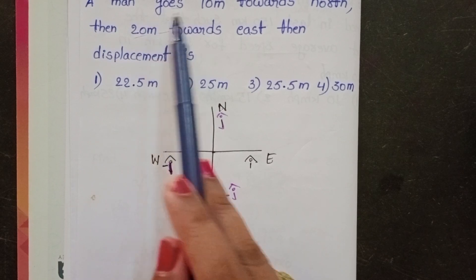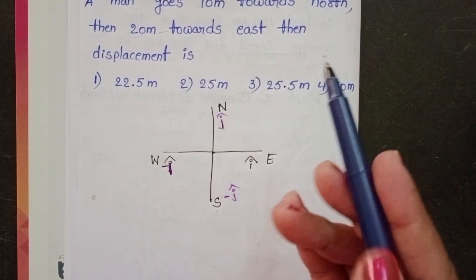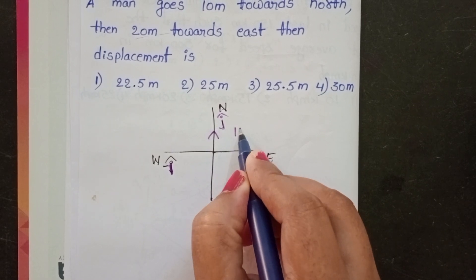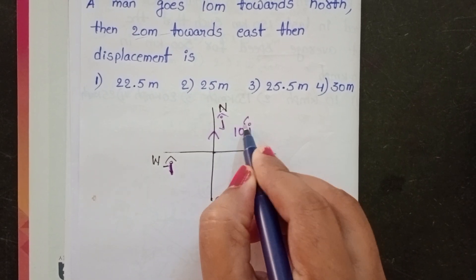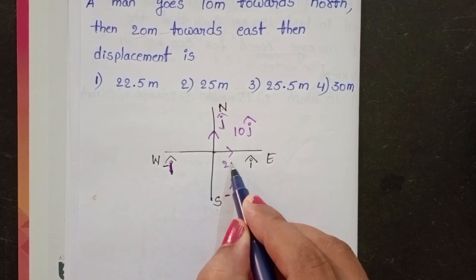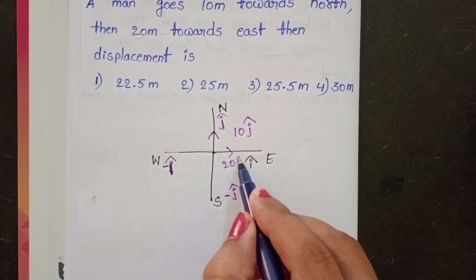So initially person moves 10 meters towards north. So along north direction, 10 j cap. And along east direction, 20 i cap.